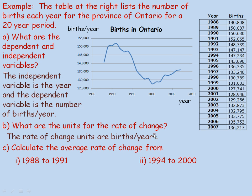You can say births per year per year, which gives a little more meaning: the number of births per year — for example, 140,808 in 1988 — and when we talk about how that number is changing, it means how fast that rate of births per year is going up or down. Births per year is itself a rate, and we're measuring how fast that rate is changing.